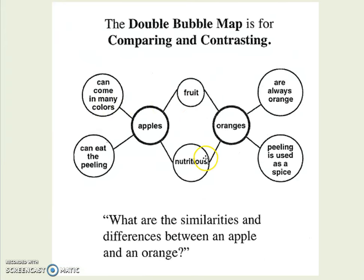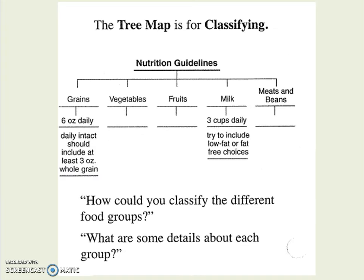I gave the great example of me and Miss Jones, but here's one about apples and oranges. You have the similarities on the inside and the differences on the outside — that's called a double bubble. It's a lot like how you would use a Venn diagram, just in a different format.